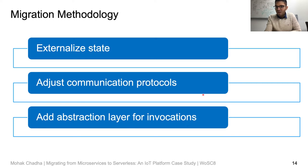Moreover, we need to change the communication protocols to work with the particular FaaS platform. For instance, converting ThriftRPC to gRPC for GCR. We also implemented an abstract interface that intercepts an incoming request to an API endpoint and forwards it to the appropriate OpenWhisk or GCR function, which is essentially the interconnect interface implemented in the IoT core backend.